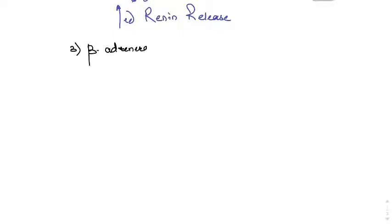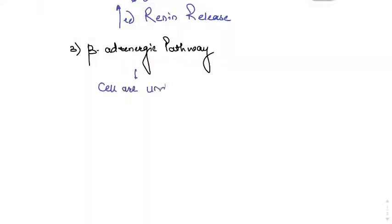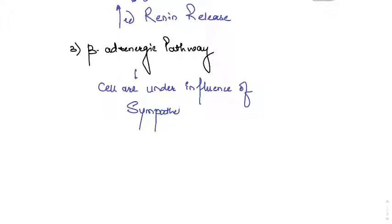The third pathway is the beta-adrenergic pathway, also called the sympathetic stimulated pathway. The JG cells are under the direct influence of the sympathetic system, so any sympathetic overactivity will lead to increased renin release.